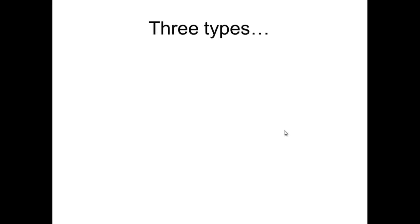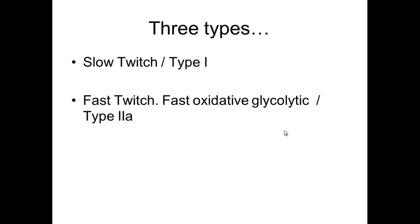Within any person, there are three major types of muscle fibers. One is referred to as slow twitch or sometimes referred to as Type I. You also have a fast twitch, referred to as fast oxidative glycolytic or FOG fiber, and that's Type IIa. You also have another type of fast twitch fiber called fast glycolytic or FG, and that's referred to as Type IIb.